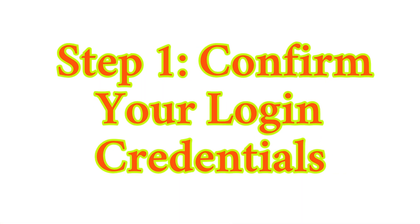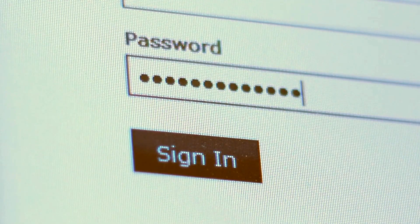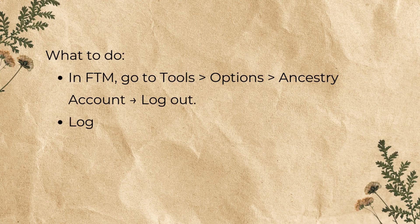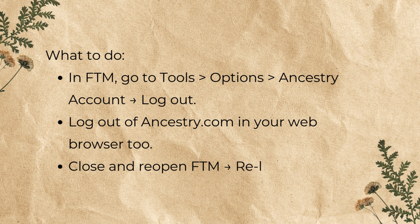Let's get hands-on with the fixes. If you've tried basic solutions and syncing still fails, here's your complete repair toolkit. Step 1: Confirm your login credentials. Login session mismatches between FTM and Ancestry can break sync. In FTM, go to Tools > Options > Ancestry Account > Logout. Logout of Ancestry.com in your web browser too. Close and reopen FTM, then re-login under Ancestry Account. This resets your token and often clears hidden sync barriers.